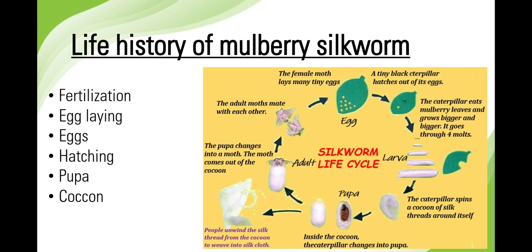The life history of the mulberry silkworm: the adult of Bombyx mori is about 2.5 centimeters in length and pale creamy white in color. This moth is unisexual in nature and has a very short life period of two to three days. Fertilization is internal, preceded by copulation.